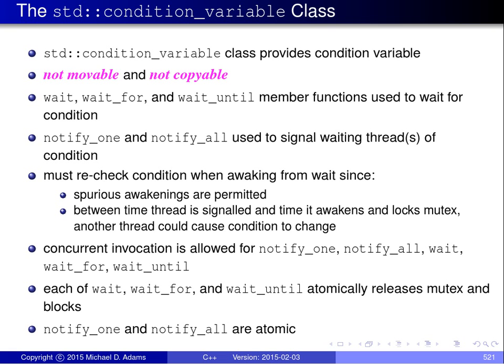Since condition variables are used in conjunction with shared data protected by a mutex, a thread invoking a wait operation would need to be holding a mutex for synchronizing access to the shared data. Since a thread should not block while holding a mutex, a mutex is provided to the wait operation so that the mutex can be released before the thread blocks. For reasons of exception safety, a mutex is specified to a wait operation using a unique_lock. The lock must be held by the thread invoking the wait operation, and then the wait operation atomically releases the lock and blocks. At the end of the wait operation, the thread unblocks and then the lock is reacquired.